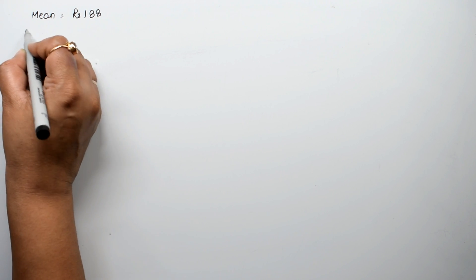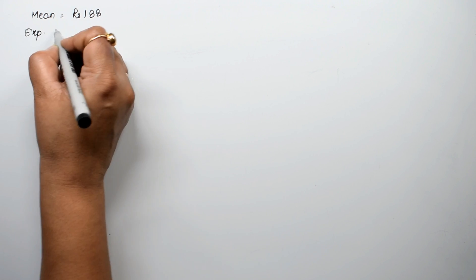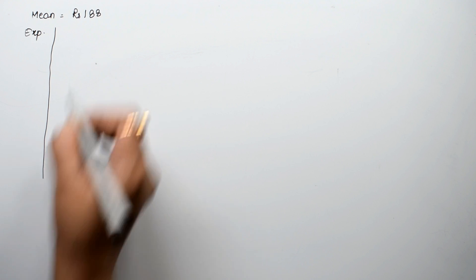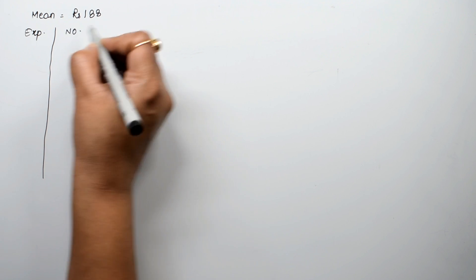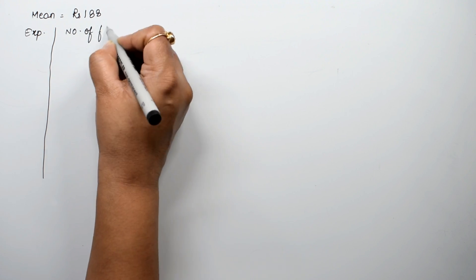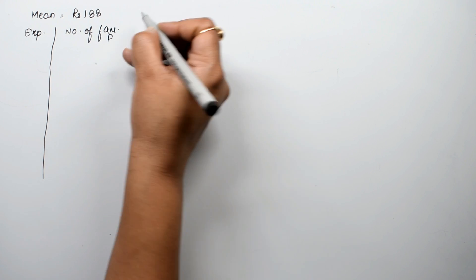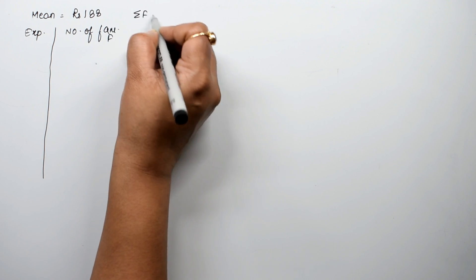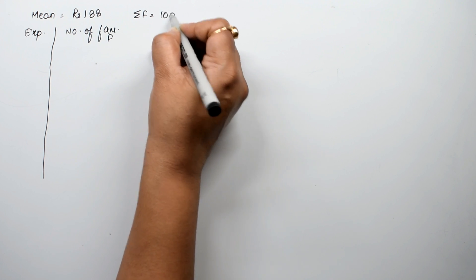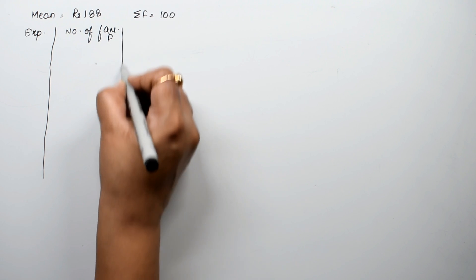We have the expenditure in class intervals and the number of families. This means our f, so the summation of f is the total number of families, which is 100.